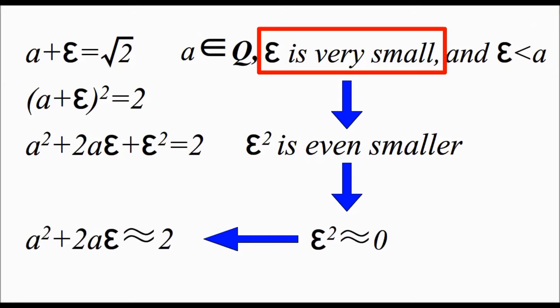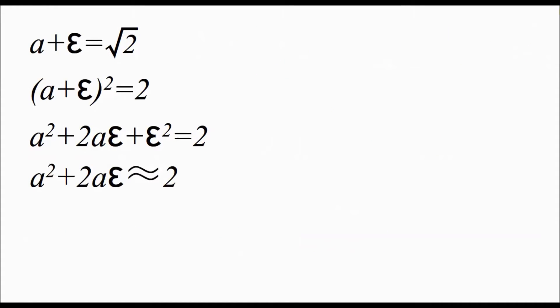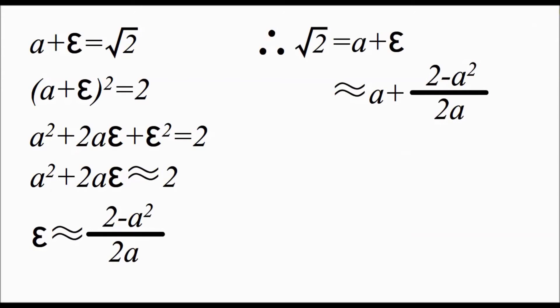Thus, a squared plus 2a epsilon is approximately 2. If we isolate epsilon, we get epsilon is approximately 2 minus a squared altogether divided by 2a. So square root of 2 equals a plus epsilon, which is approximately a plus 2 minus a squared divided by 2a, which simplifies to a squared plus 2 altogether divided by 2a.